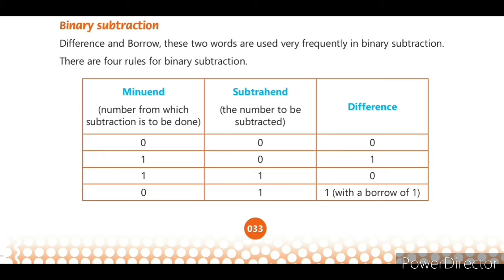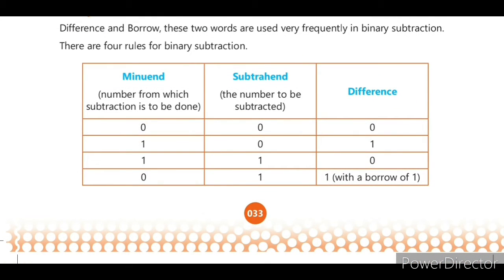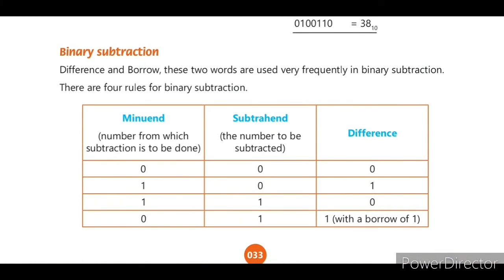The four rules: 0−0=0; 1−0=1; 1−1=0; 0−1 requires borrowing 1 from the next digit. When we borrow, 0 becomes 10 in binary, and 10−1=1. So 1 cannot be subtracted from 0 directly — we borrow one digit from the next position, making 10−1=1. 'Difference' and 'borrow' are the two key terms in binary subtraction.